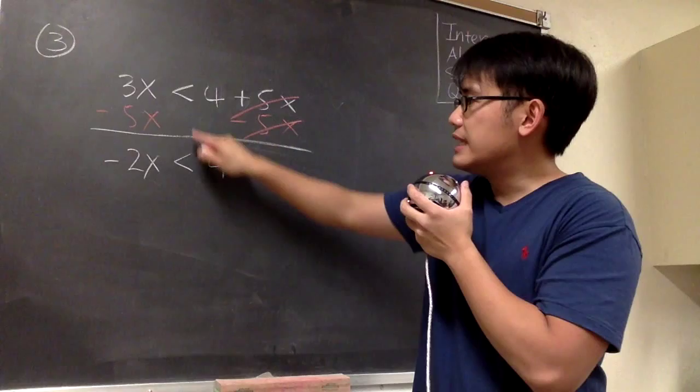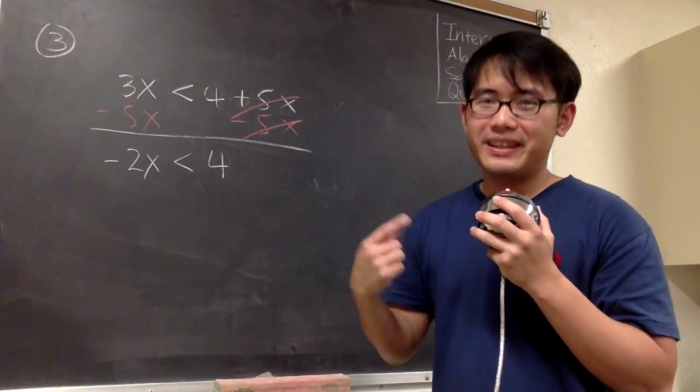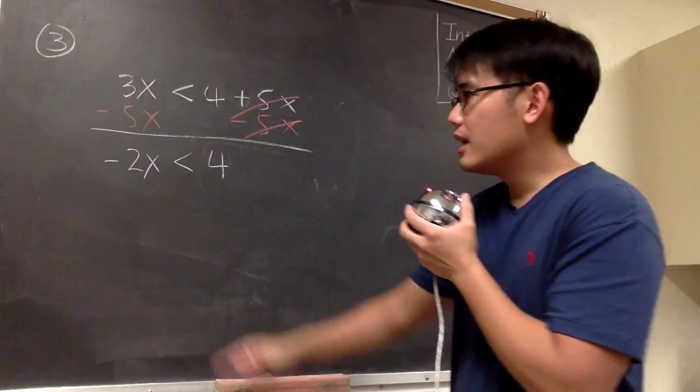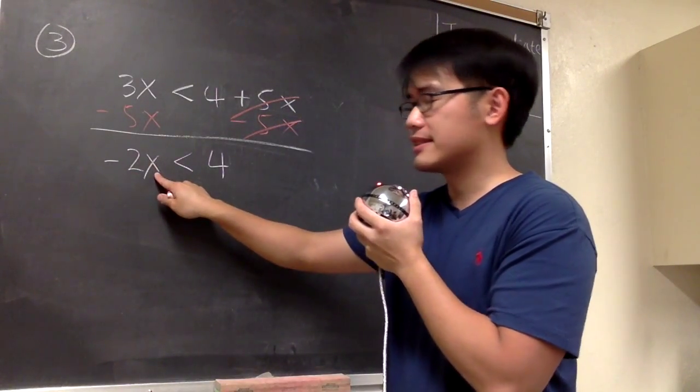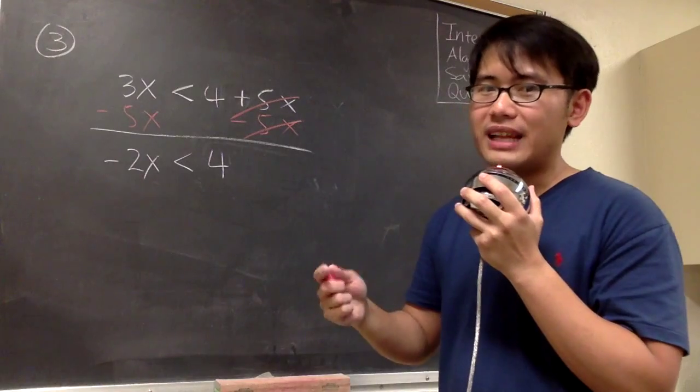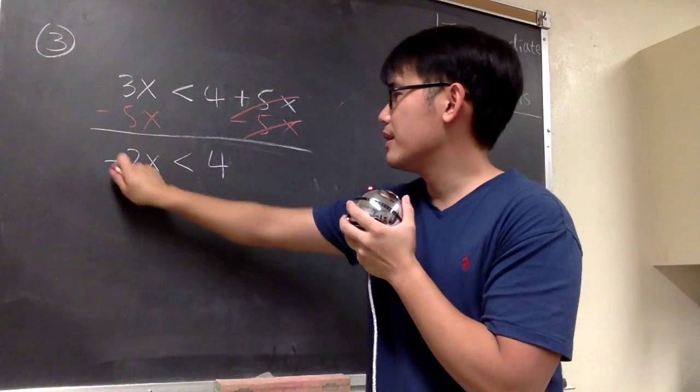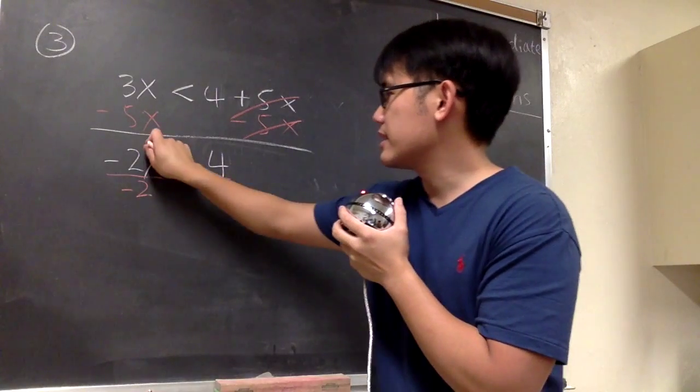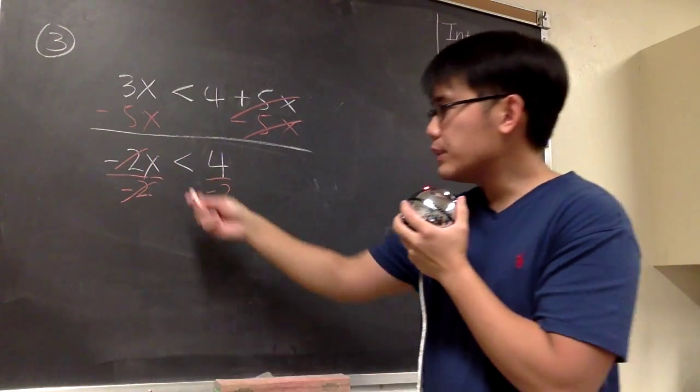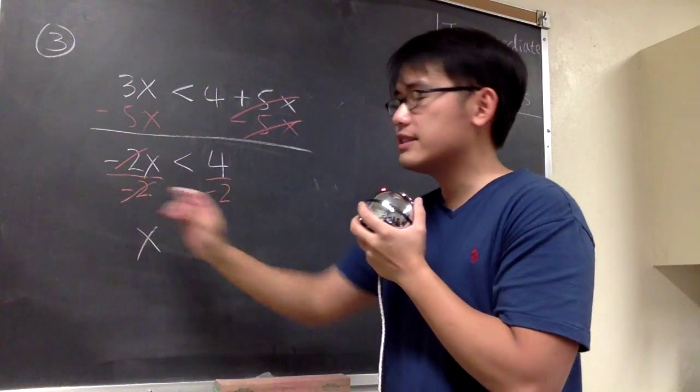We keep the same inequality because we didn't do anything crazy. But here is the crazy thing. To get x by itself, here we have negative 2 times x, right? We have to divide by negative 2. Let's divide by negative 2 on both sides. That negative 2 and negative 2 cancel, and we can get the x by itself on the left-hand side.